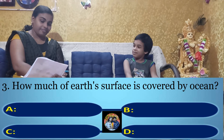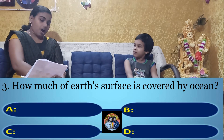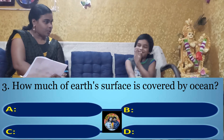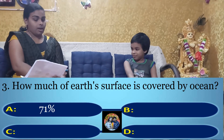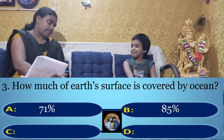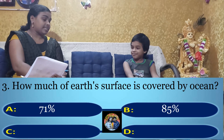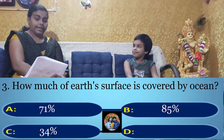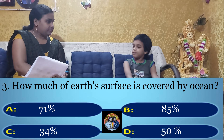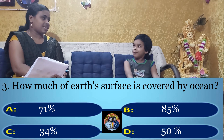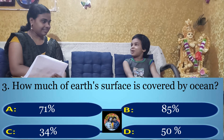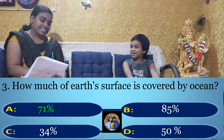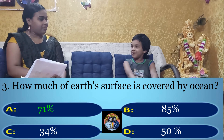Third question: How much of Earth's surface is covered by ocean? Option D: 50%. Your time starts now. The answer is 71%. The right answer is Option A: 71%.